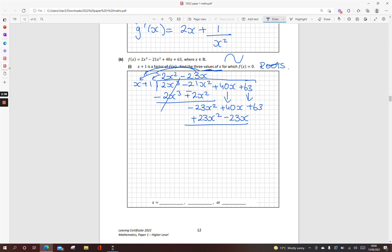Repeat the process. What I multiply x by to get minus 23x squared is minus 23x. Multiply it down. We get minus 23x squared minus 23x. Draw your line, change your signs. We now have 63x plus 63. We know we're right here because there's no remainder. What I multiply x by to get 63x is 63. Multiply that down once more, gives me 63x plus 63. Draw your line, change your signs, both cancel. No remainder.